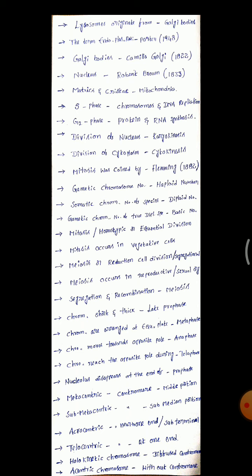Centromere is in the middle portion of the chromosome. Based on centromere position: metacentric has centromere in the middle region, sub-metacentric has it near the middle, acrocentric has centromere near one end, and telocentric has it at the terminal end.